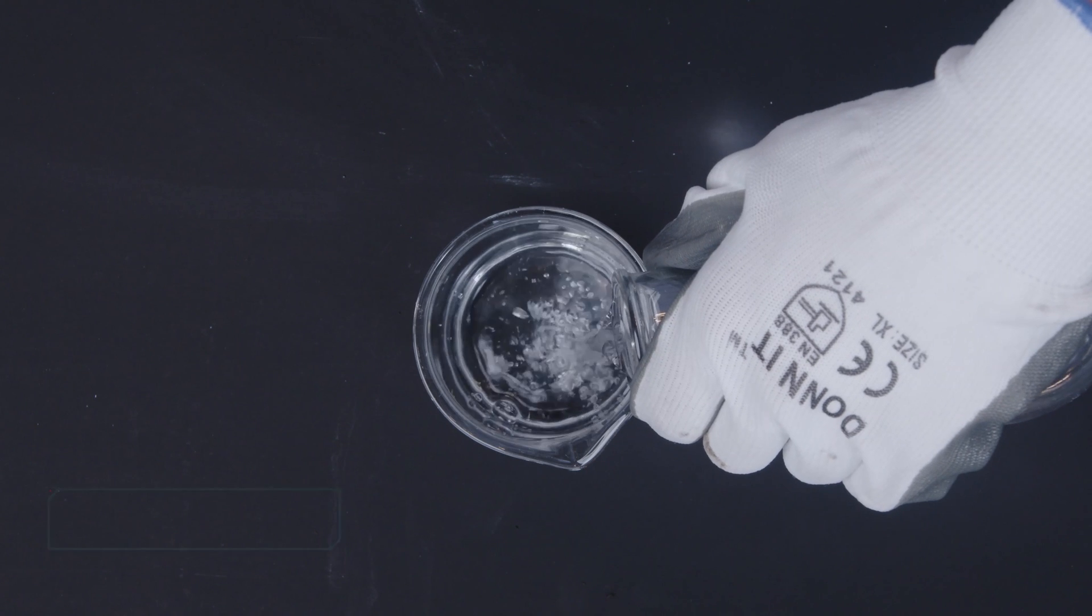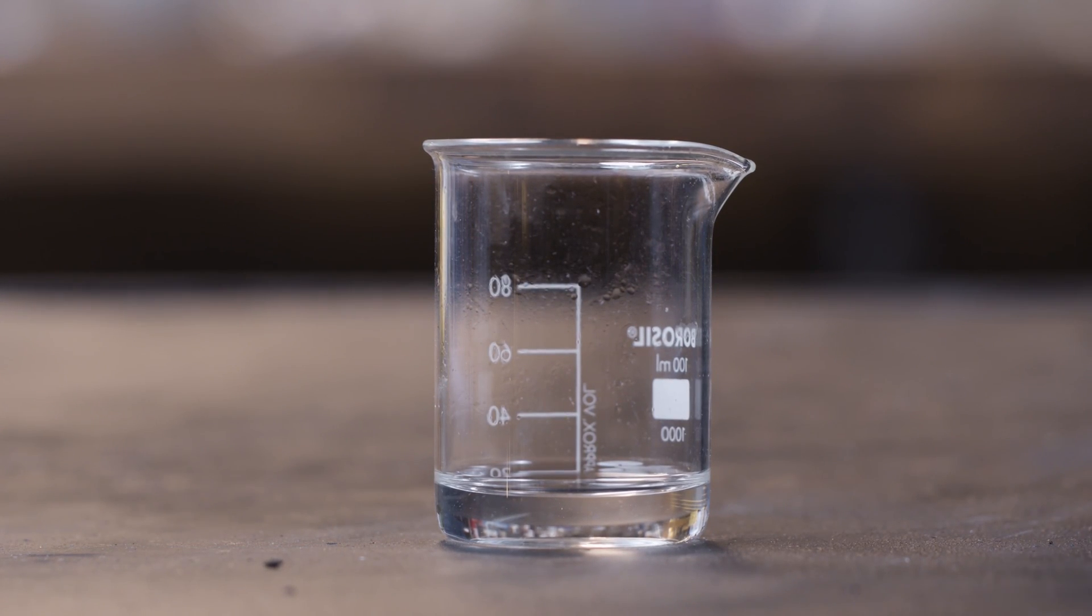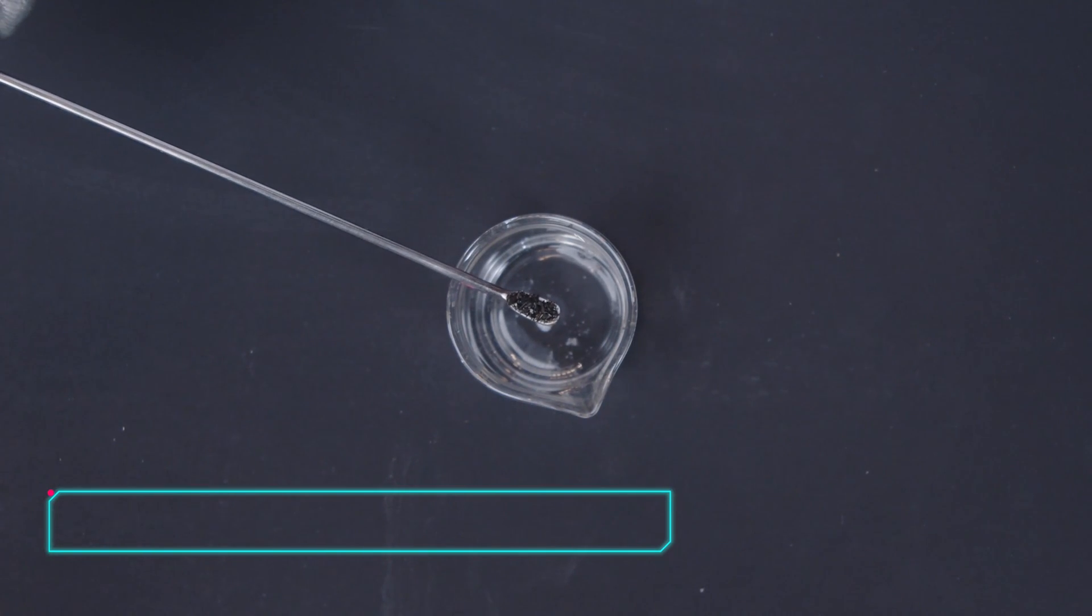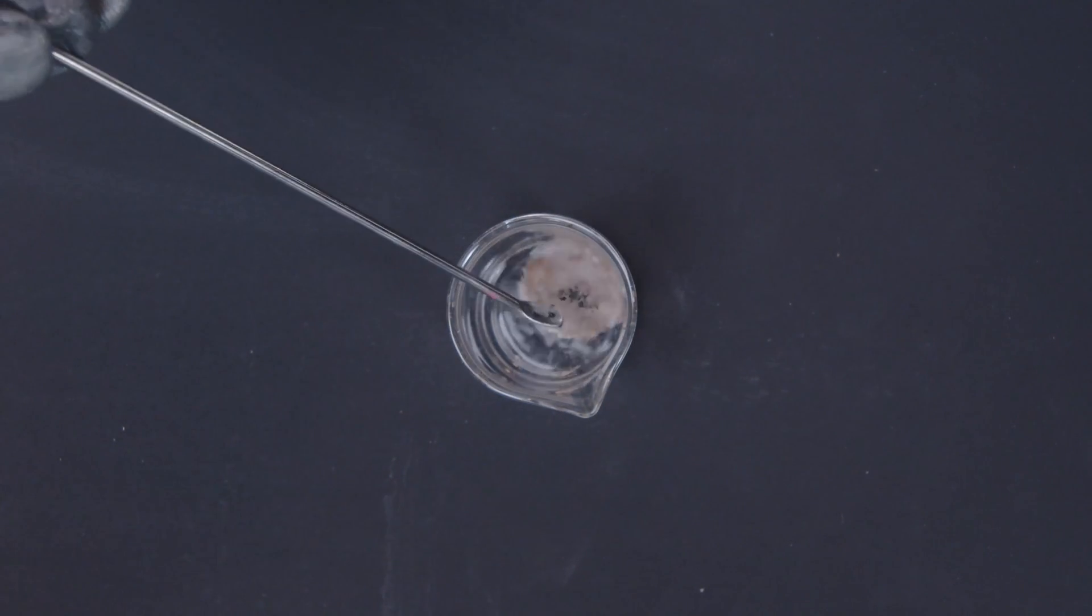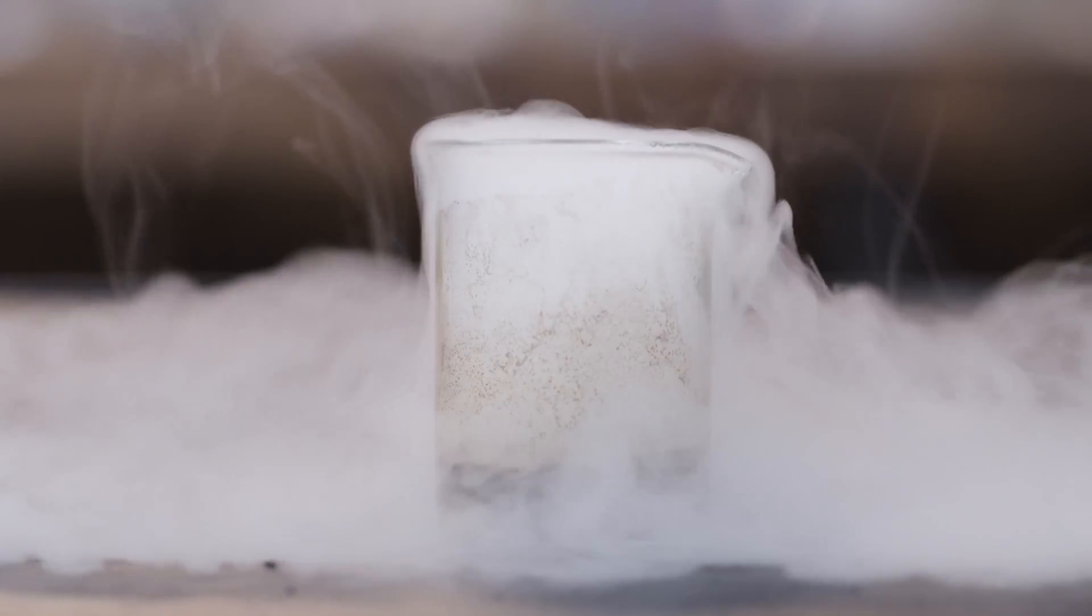Just please make sure you wear gloves because this stuff is extremely corrosive. So with one of those deflagrating spoons, put a few potassium permanganate crystals into the beaker and watch how much vapor rises into the air.